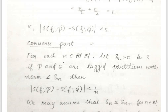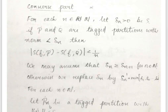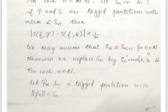The second part: we have to establish that f is Riemann Integrable. Here we try to construct an adjustment function. For each n element of ℕ, let delta_n > 0 be such that if P-dot and Q-dot are two tagged partitions with norm of P-dot less than delta_n and norm of Q-dot less than delta_n, then |S(P-dot) − S(Q-dot)| < 1/n. We may assume that delta_n ≥ delta_{n+1} for all n element of ℕ.